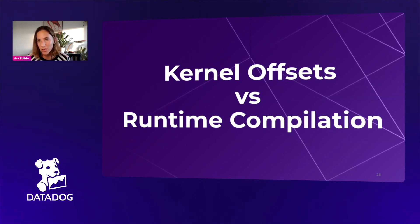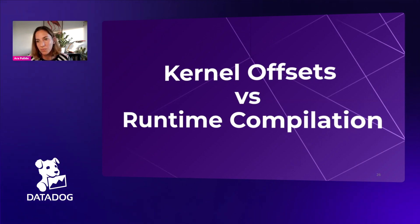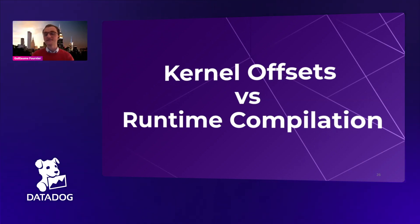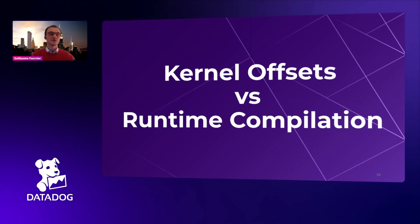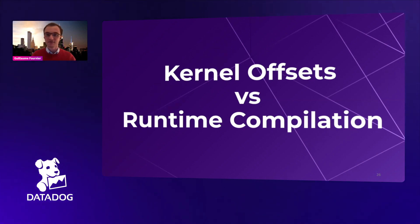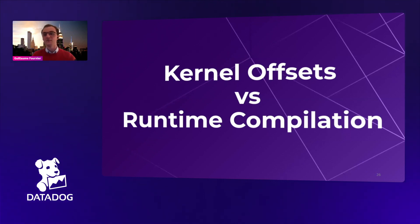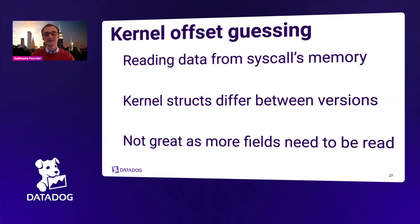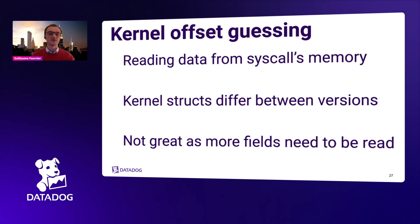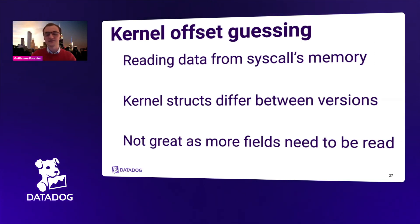eBPF programs run in kernel space and read structures directly from kernel memory, which means the structures of the kernel itself. From one kernel version to another, from one distribution to another, or with different compilation flags, you will have different offsets in those structures, and those offsets make your life really hard when you want one solution that fits all kernels. We currently handle this two ways: kernel offset guessing, and runtime compilation.